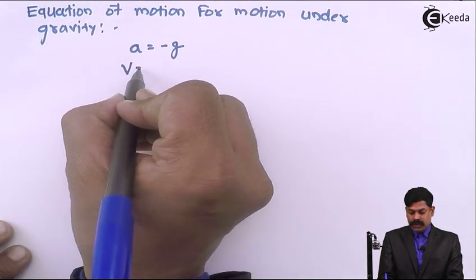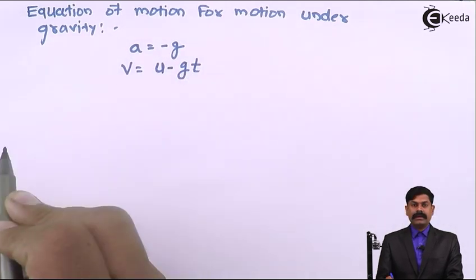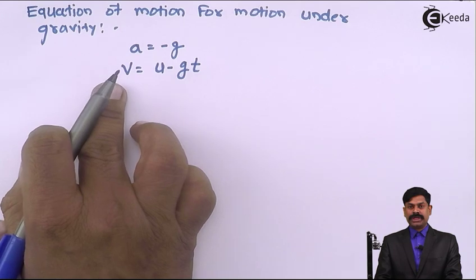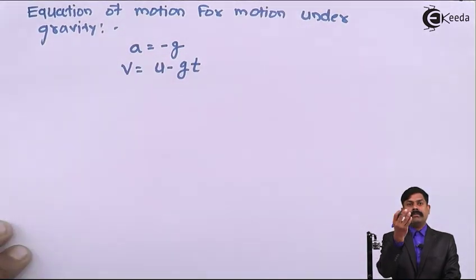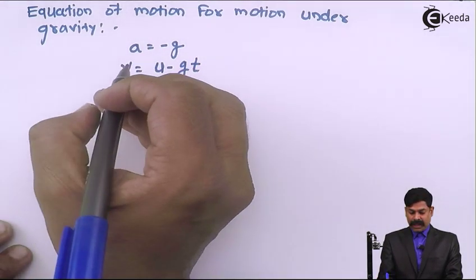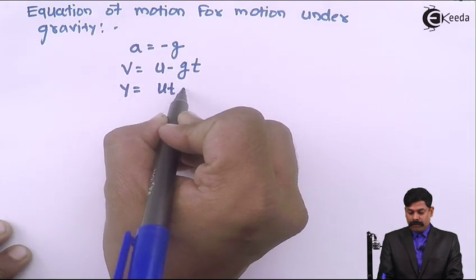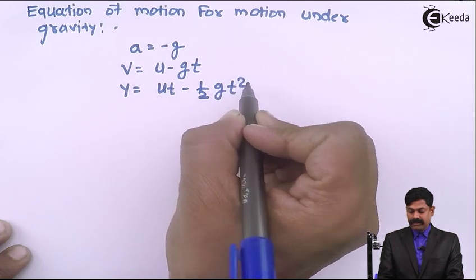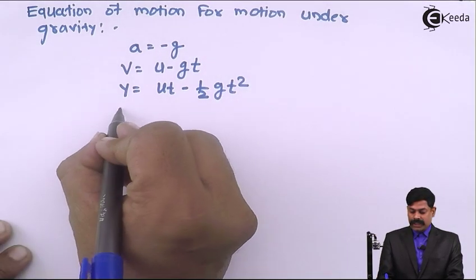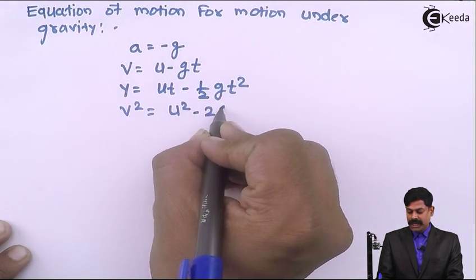We write v equals to u minus gt — the first equation of motion for motion under gravity when a particle is freely falling towards the surface. y equals to ut minus half gt squared. v squared equals to u squared minus 2gy.